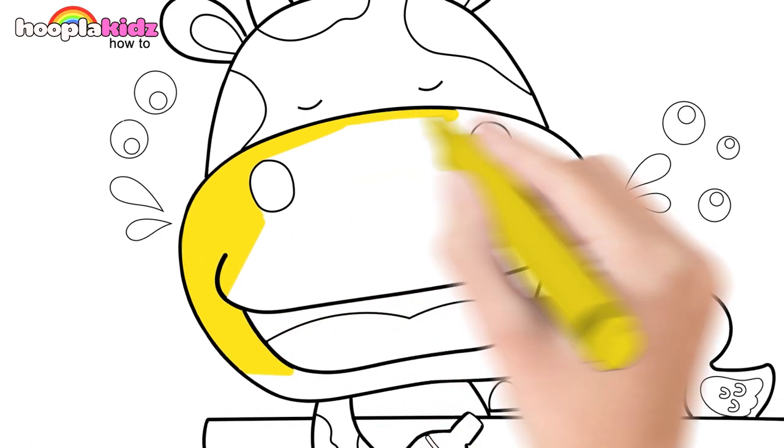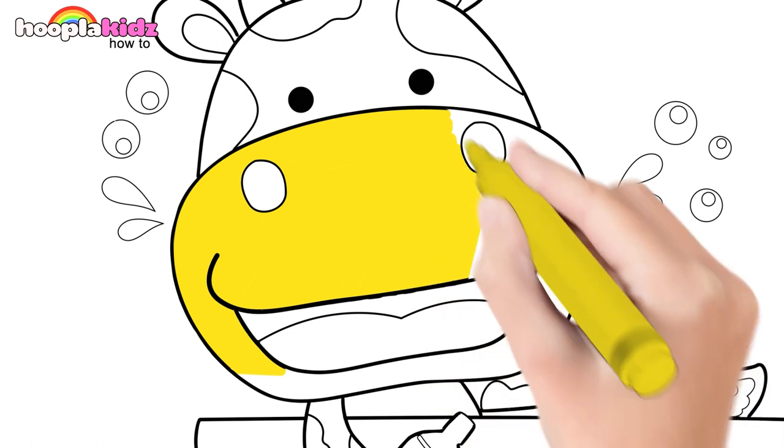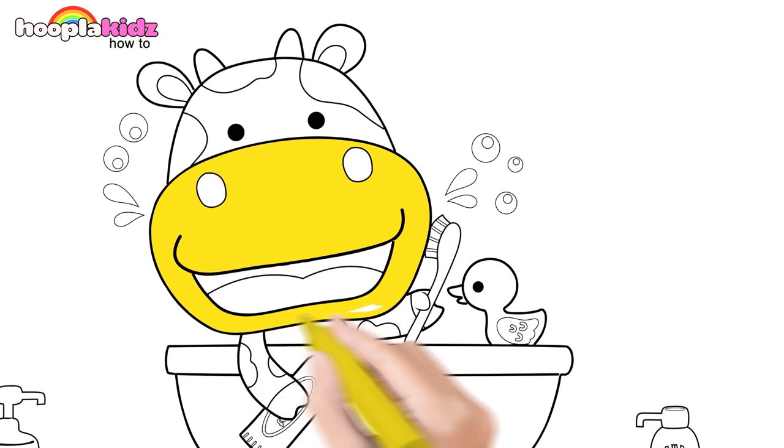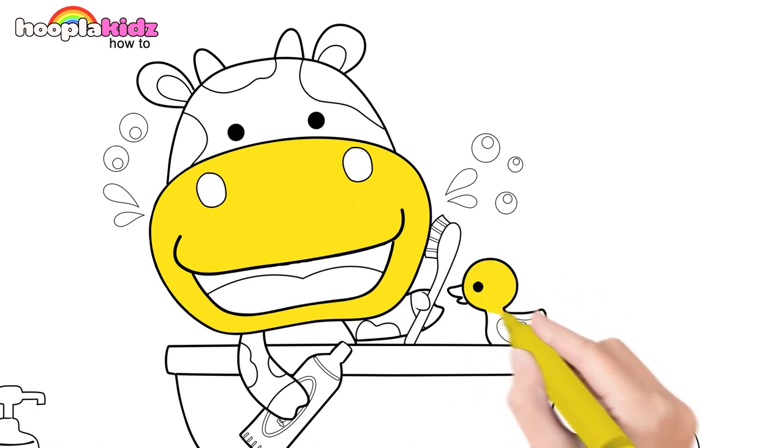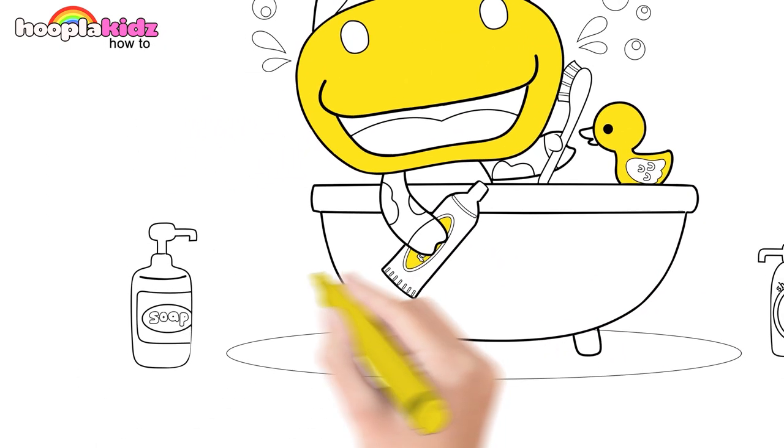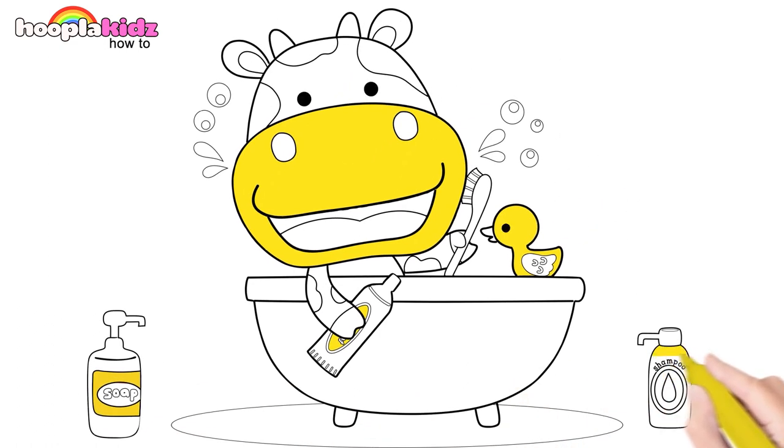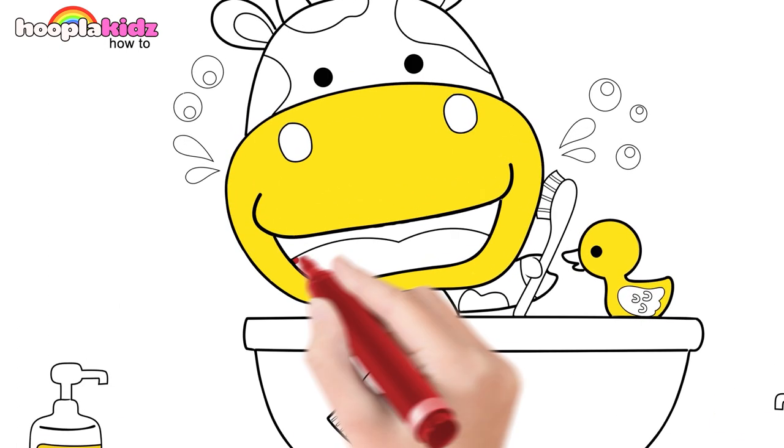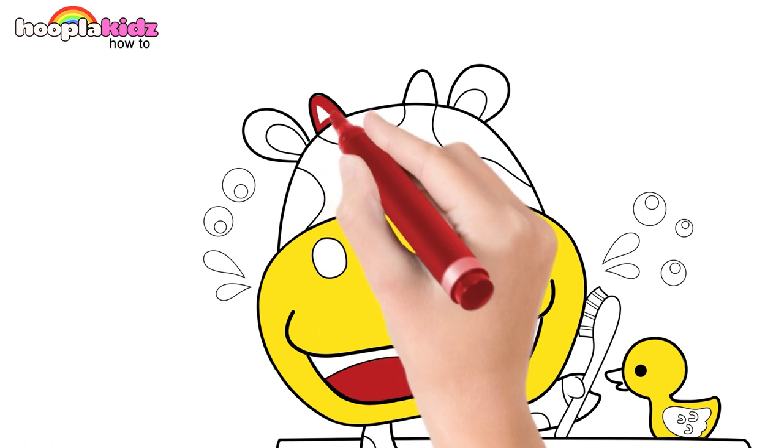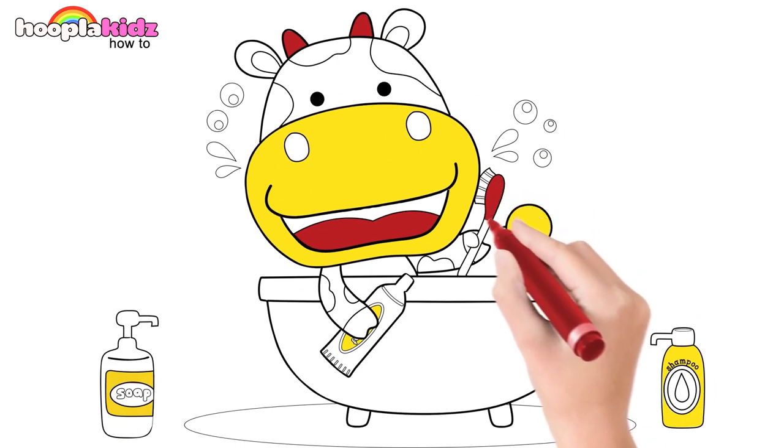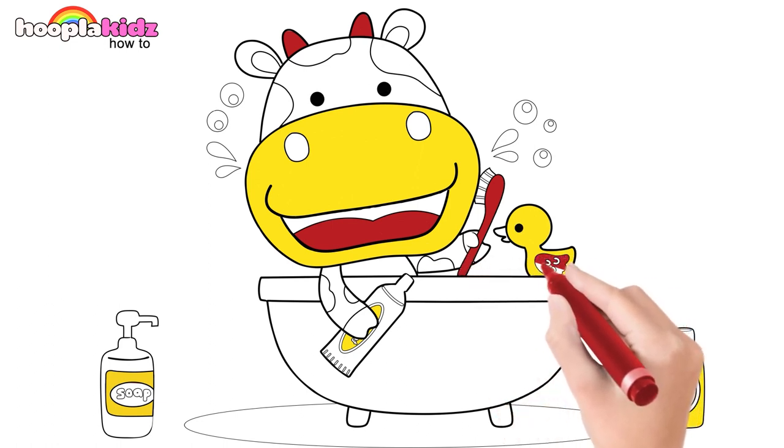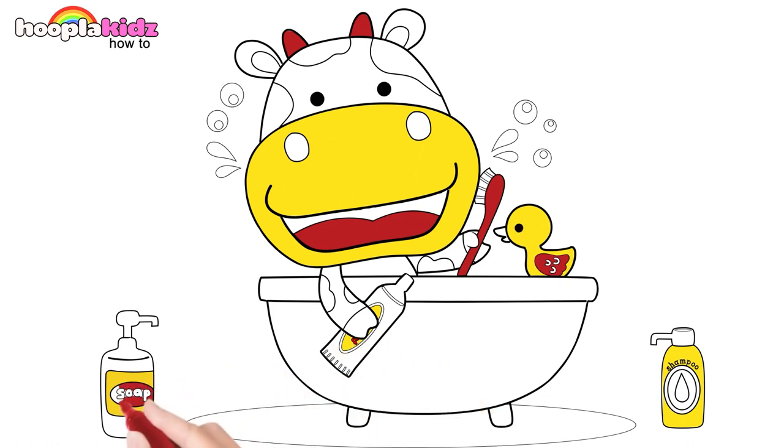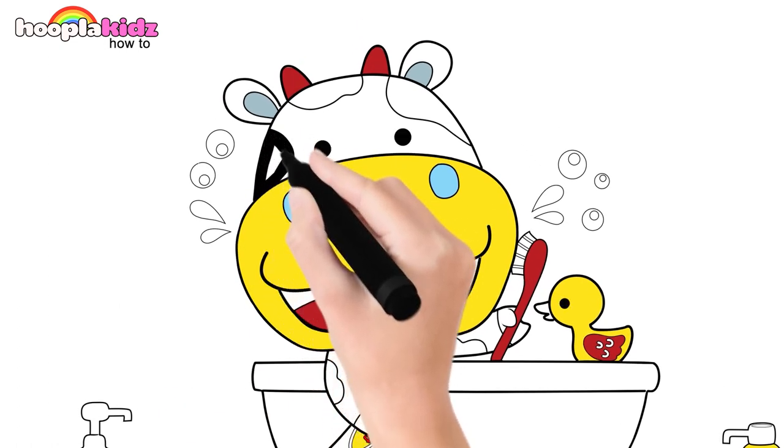And now we color in. Let's use yellow for the face. And the duck. The bottles too. Red color for the tongue. The horns. And the brush. Let's use red for the tiny details too. Add some blue now. For the spots, we should use black. Don't you think so?